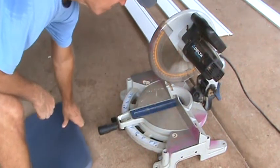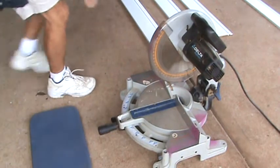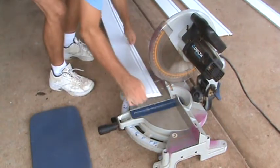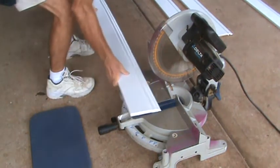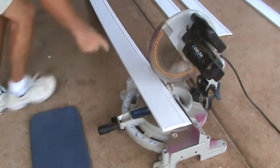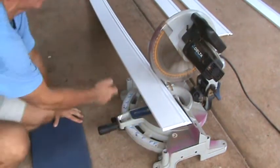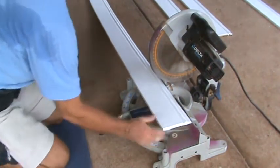You see this table is only about three and a half, four inches up off the ground. So when I bring in something long this way, it's right on the ground and see how this is up.